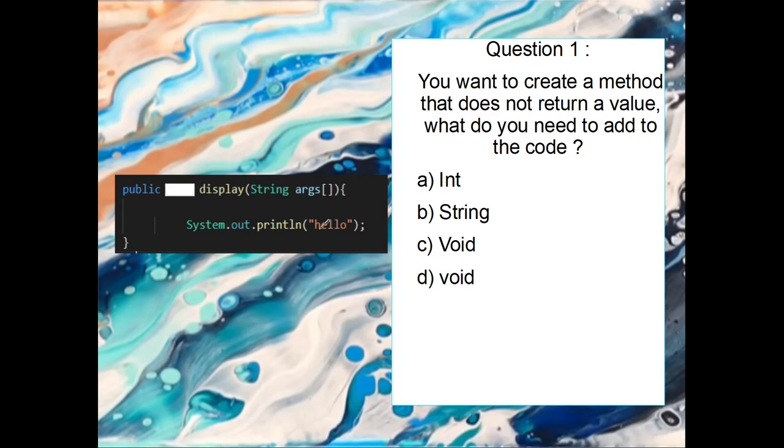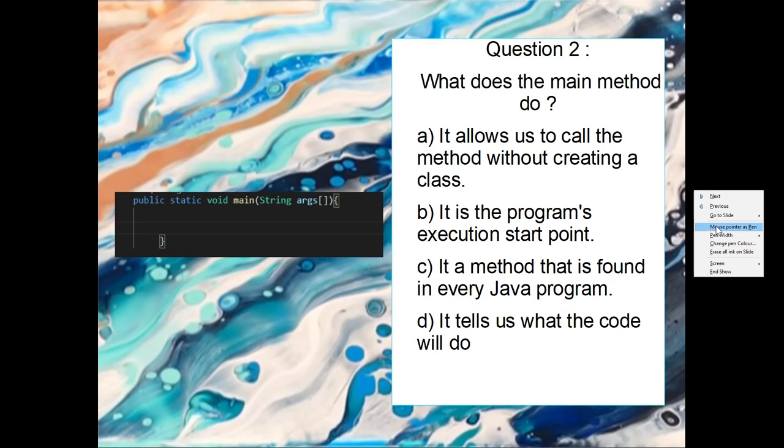Okay, question one. So we need to decide what is the return type for this. We know we're not returning an integer, so we can get rid of this. We're not returning a string, so we can get rid of this. So it's between two voids because we're not returning anything. If we look here, this is a capital and this is a lowercase. And so the return type we want to put in is always lowercase. So we want to get rid of the C and the right answer is D.